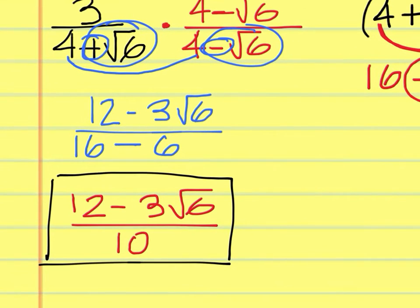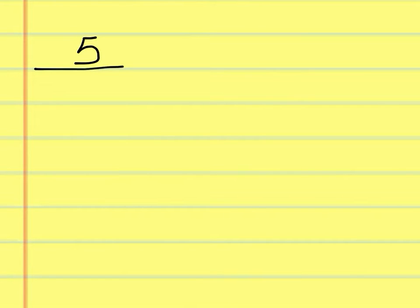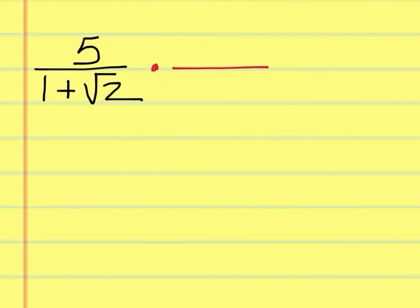Any questions about that first one? Now you have to answer questions for me about the same thing we just did — a different problem. This one is 5 over 1 plus the square root of 2. The first thing we have to do is multiply the top and the bottom by the conjugate, which is 1 minus square root of 2.